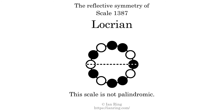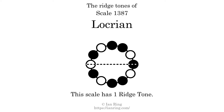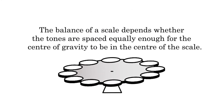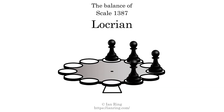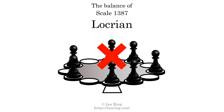This scale has reflective symmetry across an axis position three semitones from the root. This scale has a different pattern of intervals ascending and descending, so it is not palindromic. This scale has one ridge tone. The balance of a scale depends whether the tones are spaced equally enough for the center of gravity to be in the center of the scale. This scale is not balanced.